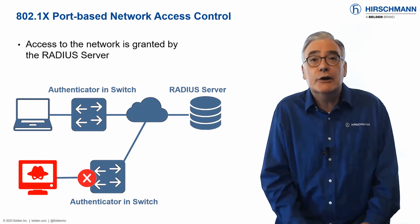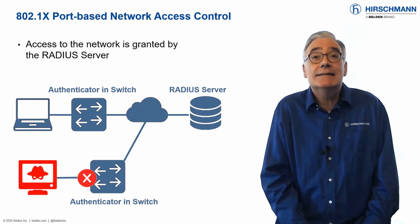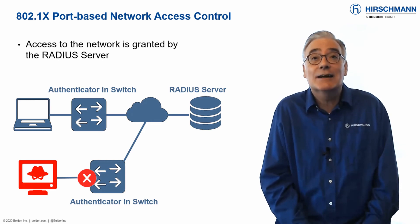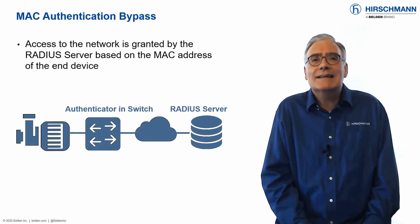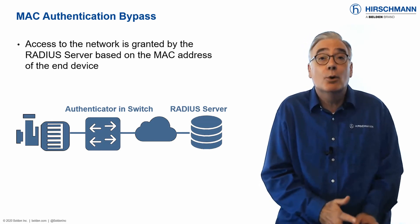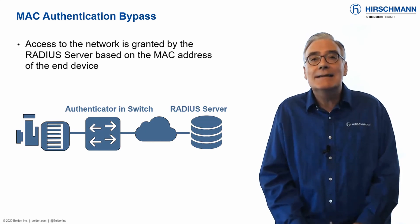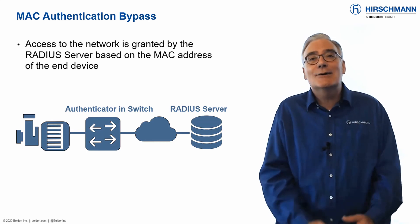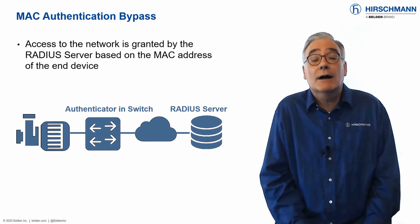Network access control using 802.1x is commonly used in IT networks today, and its deployment in OT networks is increasing. 802.1x authentication works well in modern networks where all devices support the protocol. But in OT networks, many industrial devices do not support 802.1x. So, does this mean that you cannot use authentication for network access at all?